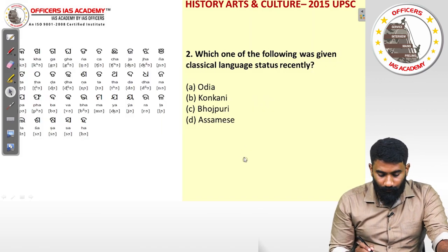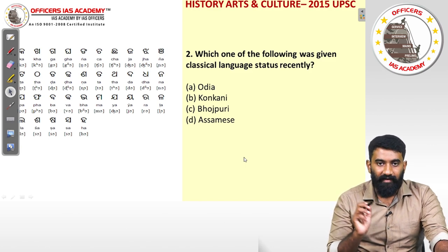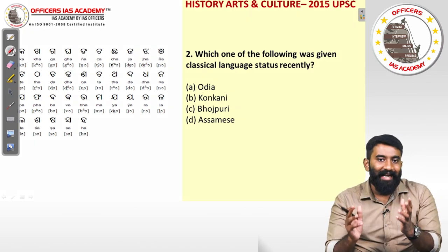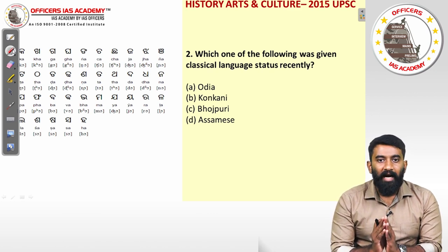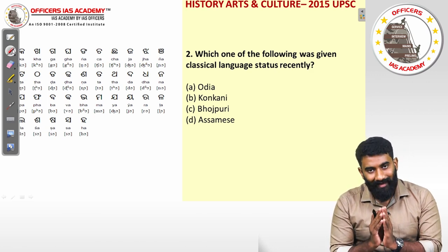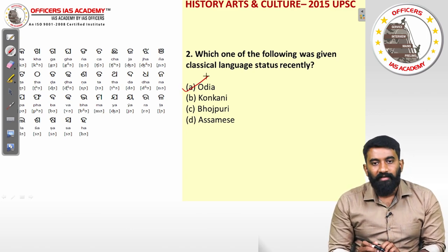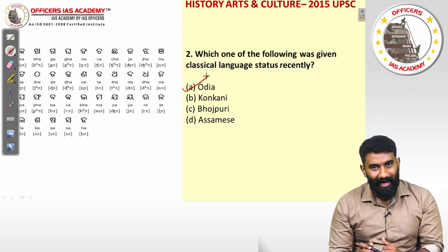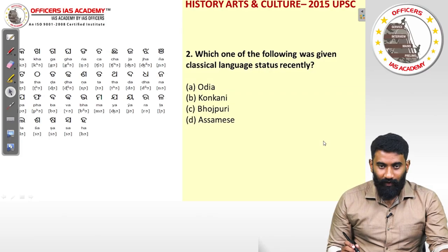Question two: which one of the following was given classical language status recently? Classical language status has been given to Tamil, Malayalam, Kannada, and Telugu. Most recently, Odia was also given the status of a classical language — so that is the answer. These are factual questions and you simply have to remember these facts.